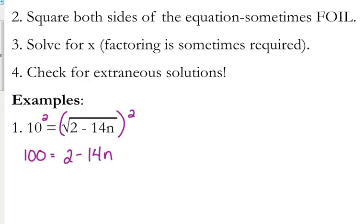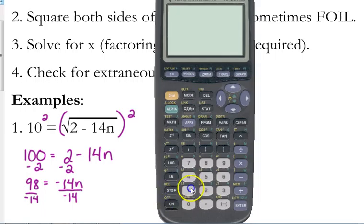It's not a radical function anymore — this is just a linear equation. We have constants and we have n, so we just need to solve this like we would any other linear equation. Subtract 2 from both sides: 98 equals negative 14n. Then divide by negative 14. Fractions are possible; not all the answers are going to be whole numbers.